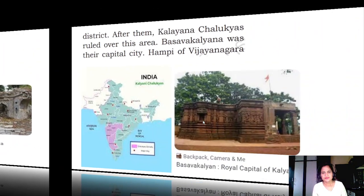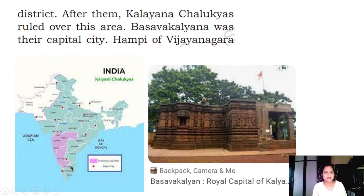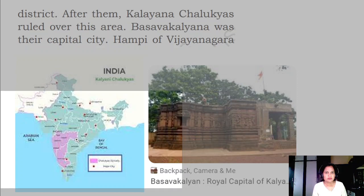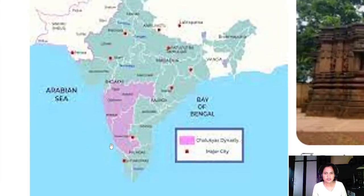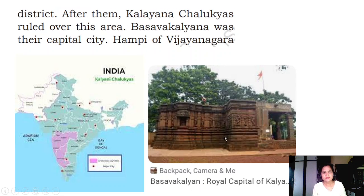After the Rashtrakutas, the Kalyana Chalukyas came to power and ruled over this region. Basava Kalyana was their capital city. The Chalukya dynasty was very large, and the whole of Karnataka was ruled by the Chalukyas. This is the map of their dynasty.